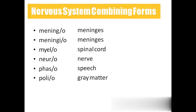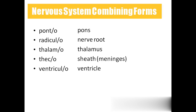Poliomyelitis — polio means gray matter and myelitis means inflammation of the spinal cord, so the gray matter of the spinal cord gets inflammation, which we call poliomyelitis. Further combining forms: ponto means pons; radiculo means nerve root; thalamus means thalamus; thico means sheet, also called meninges; ventriculo means ventricle — the inner spaces of the brain. When you cut the brain, the spaces inside are called ventricles.